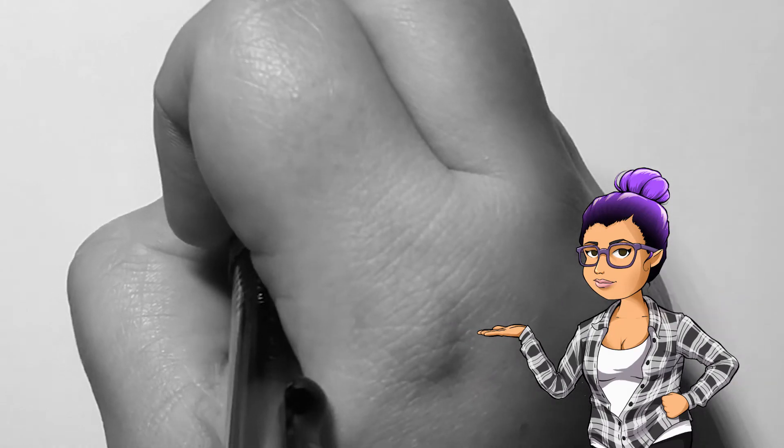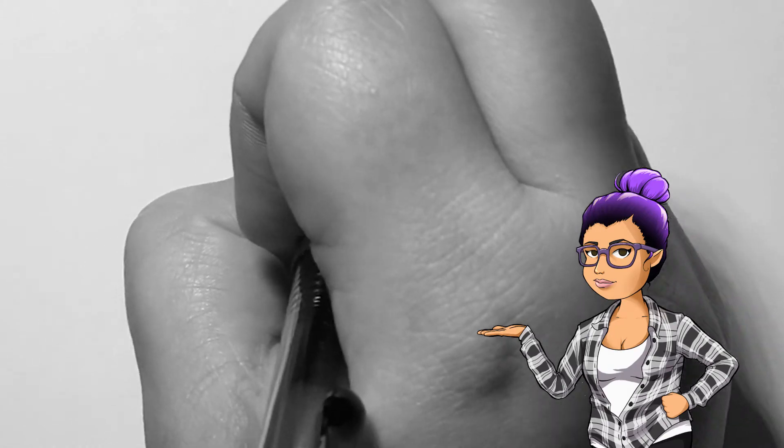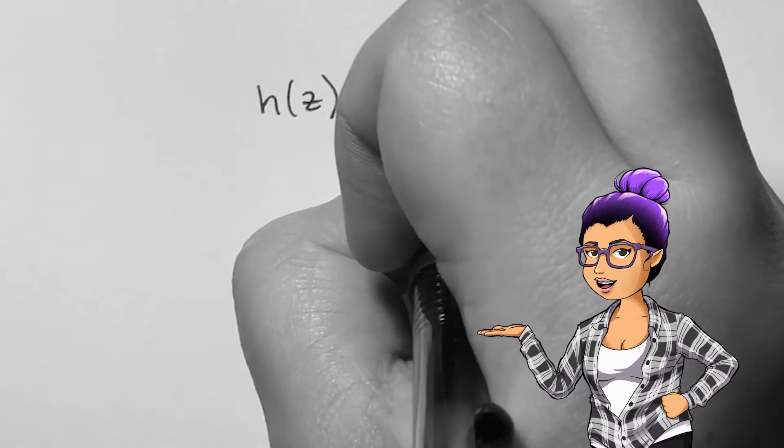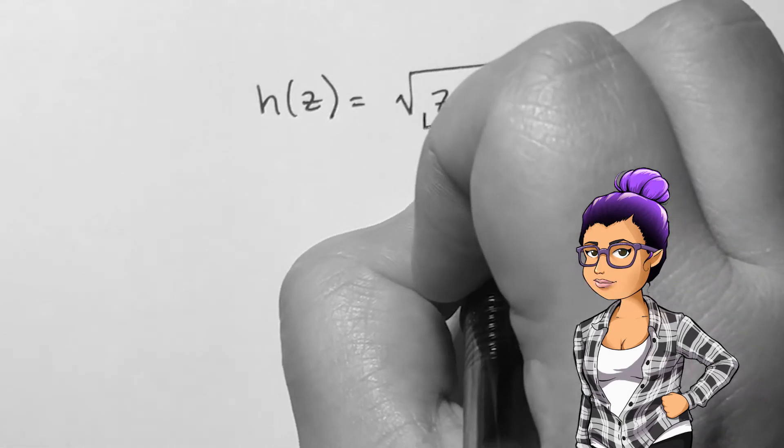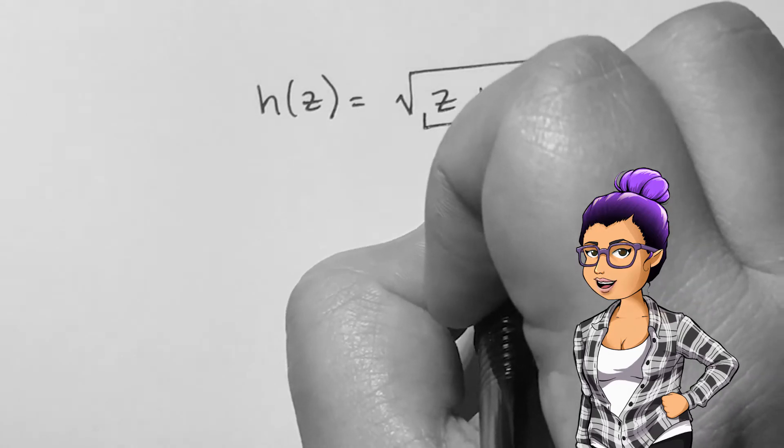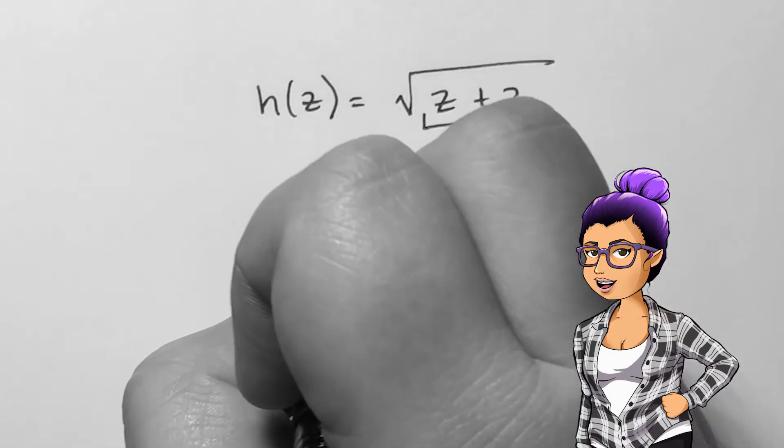If h of z equals the square root of z plus 2, then I would need to think about the domain of the square root function. The square root function couldn't handle any negative numbers under the square root symbol, so anything under a square root symbol must be greater than or equal to 0.